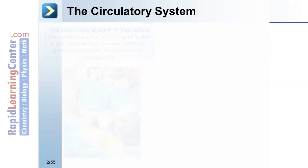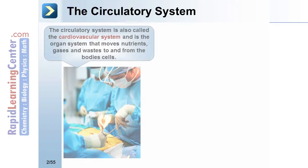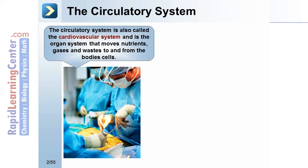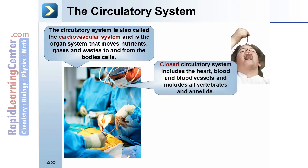The circulatory system is also called the cardiovascular system and is the organ system that moves nutrients, gases, and wastes to and from the body's cells. The closed circulatory system includes the heart, blood, and blood vessels, and includes all vertebrates and annelids.